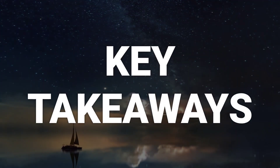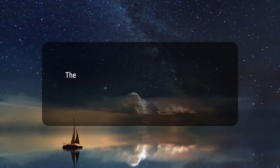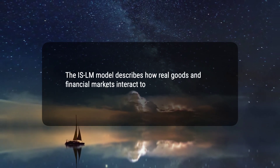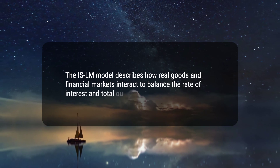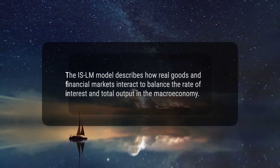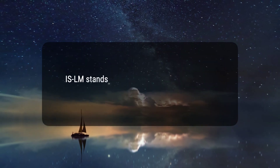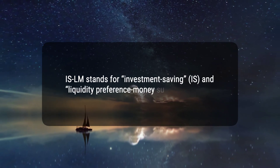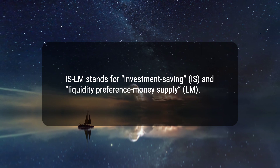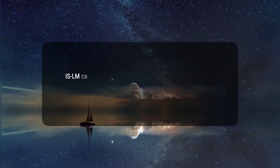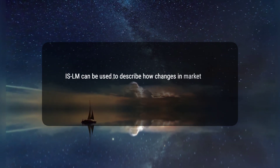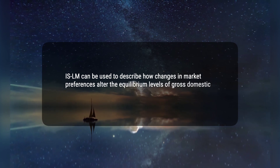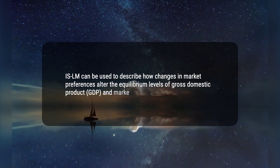Here are three key takeaways. 1. The IS-LM model describes how real goods and financial markets interact to balance the rate of interest and total output in the macroeconomy. 2. IS-LM stands for Investment Saving, IS, and Liquidity Preference Money Supply, LM. 3. IS-LM can be used to describe how changes in market preferences alter the equilibrium levels of gross domestic product, GDP, and market interest rates.